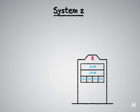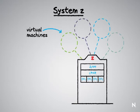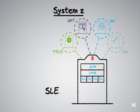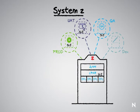You take ZVM and install it on top of an LPAR — a logical partition — and then you can create virtual machine guests. In this example I have four: production, UAT, quality assurance, and dev. But you can have literally hundreds of guests. From a SUSE Linux perspective, you buy SUSE Linux for the four IFLs, and then you can spin up as many virtual guests on top of this ZVM environment as you want. A customer is only paying for those four IFLs from a SUSE Linux perspective.